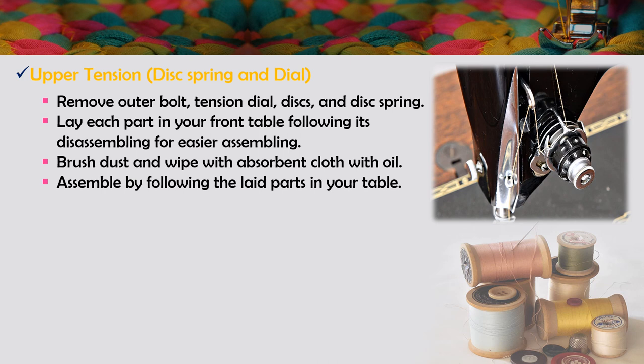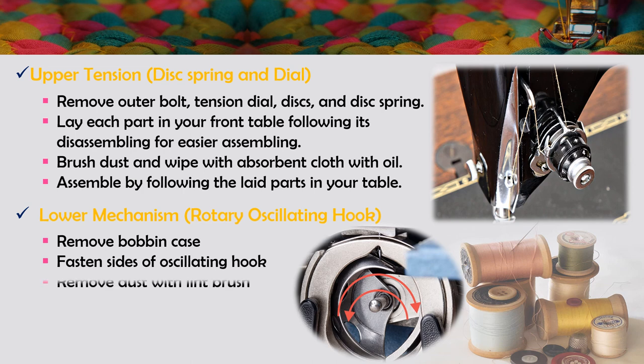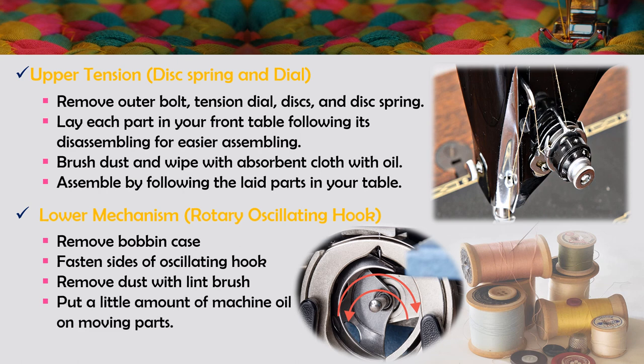Reassemble by following the order of parts on your table. For the lower mechanism — the rotary oscillating hook — first remove the bobbin case, then remove dust from the shuttle side of the oscillating hook with a lint brush. Put a little amount of machine oil on moving parts, then return all spare parts in place.